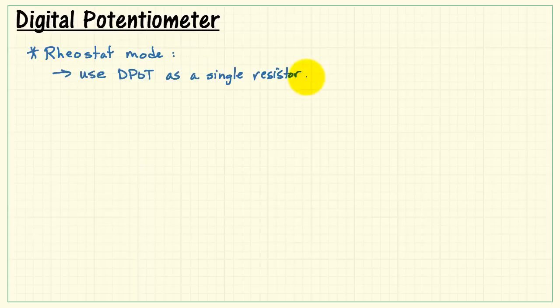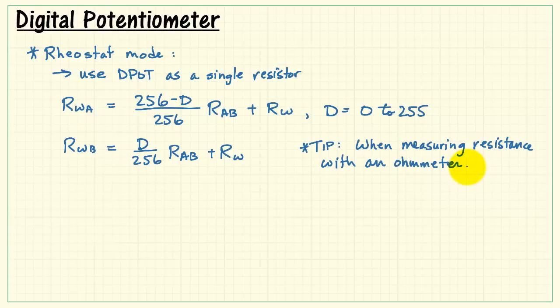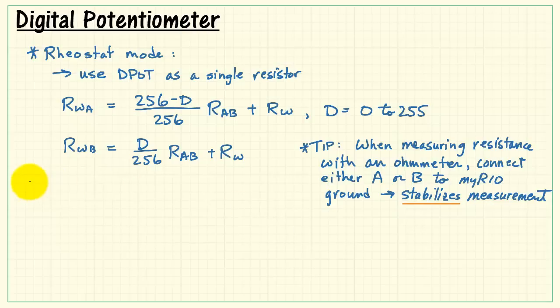Now to finish things up, I'd like to give you the design equations that you can use for the digital potentiometer. When you're using the device as a rheostat, that is, as a single resistance, then you have one equation for the resistance between the wiper terminal and terminal A. This is with the digital value varying between zero and 255. And here's the equation going from the wiper to terminal B. Here's a quick tip. When measuring the resistance with an ohmmeter, I suggest that you connect either terminal A or B to the myRIO ground. This stabilizes the measurement somewhat, at least in my experience.